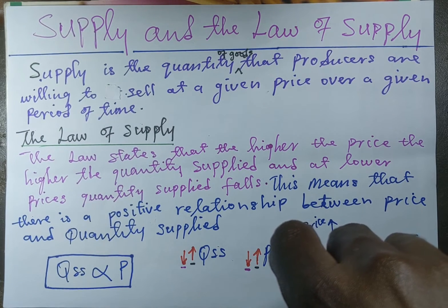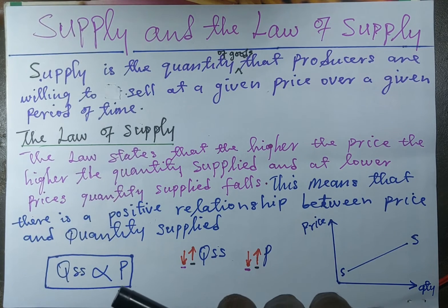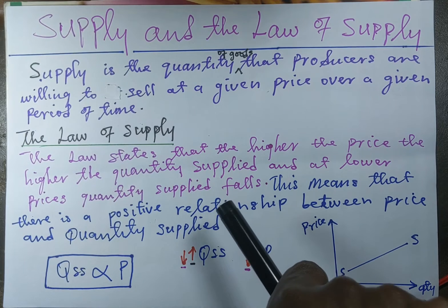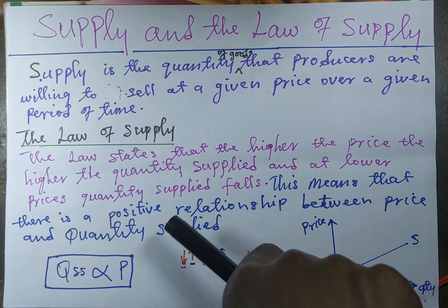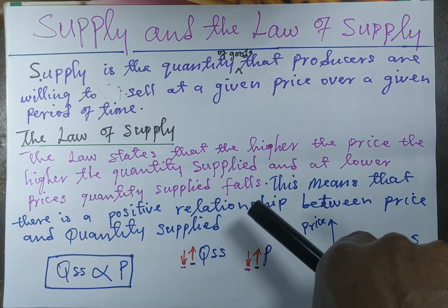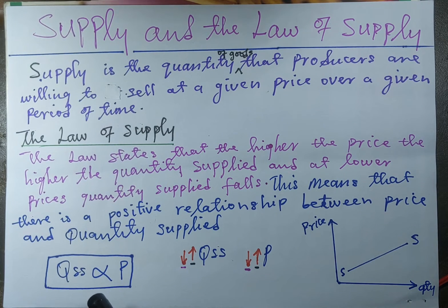The law of supply states that the higher the price, the higher the quantity supplied, and at lower prices quantity supplied falls. This means that there is a positive relationship between quantity supplied and price — when price increases, quantity supplied also increases. This can be shown by a mathematical expression which demonstrates that price has a direct relationship with quantity supplied.